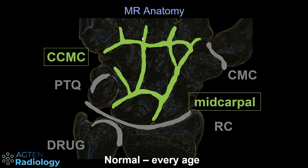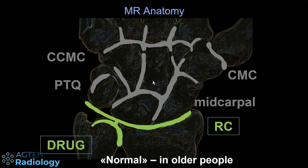You should not have contrast in the CMC1. If it's going in there during an arthrography then it's clearly abnormal — the CMC1 is a separate compartment.